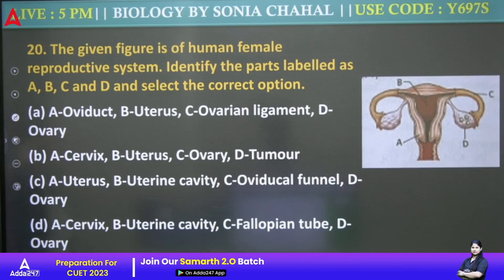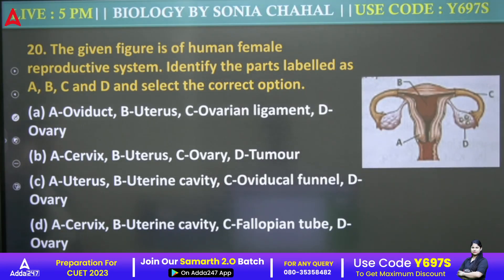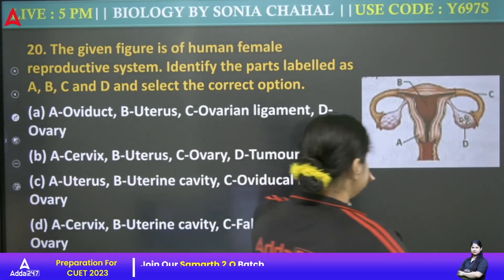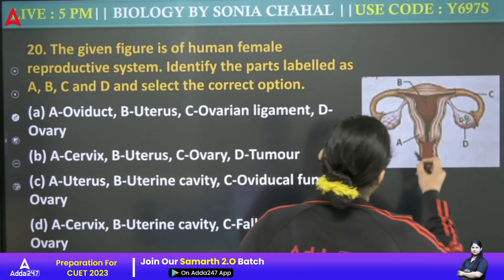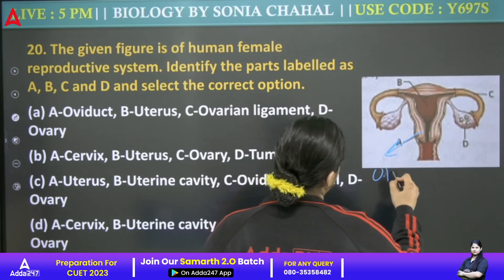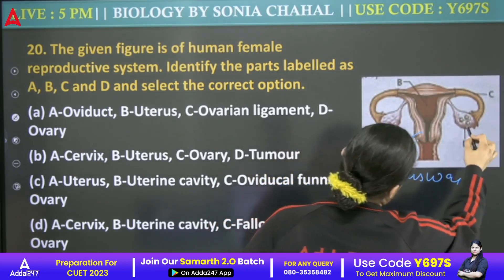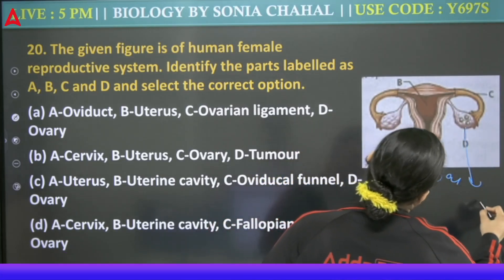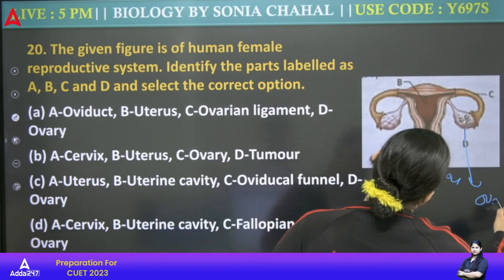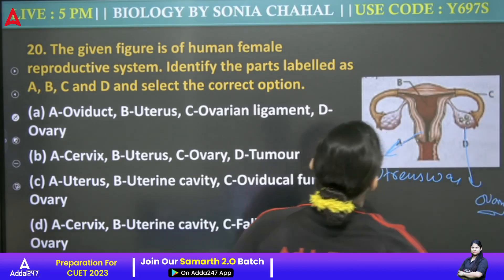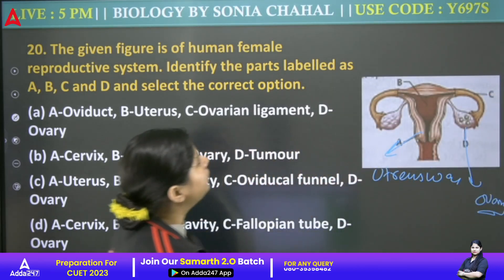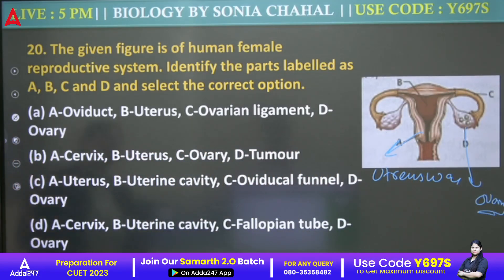Next: In the given figure of the human female reproductive system, identify the parts labeled A, B, C, and D and select the correct option. A is uterus wall. D is ovary. C is fallopian tube. B is uterus.